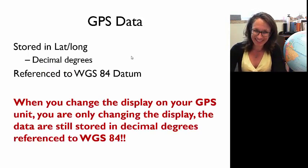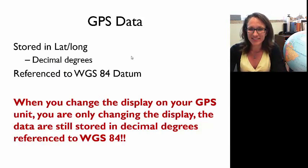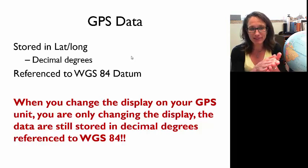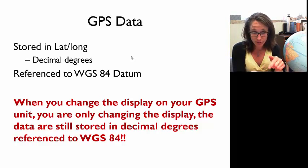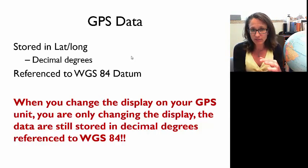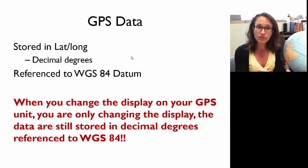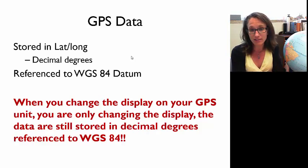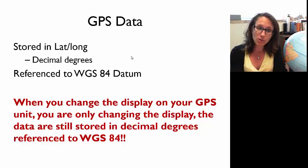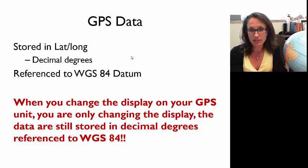GPS data are stored in latitude, longitude, decimal degrees, referenced to the WGS 84 datum. If you change the display on your GPS unit to show different coordinates, you're just telling the receiver to take that raw data and convert it to UTM or whatever coordinates you want — but your GPS receiver is still keeping those data in lat/long. When you transfer your data off your GPS unit, it's still in lat/long, decimal degrees, WGS 84. It's not until you export to ArcGIS that you'll change that.